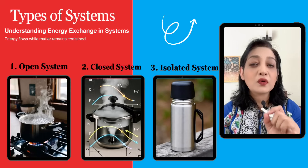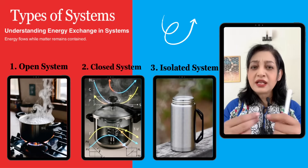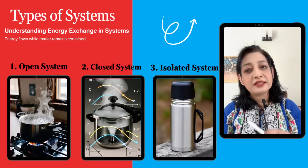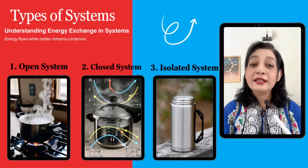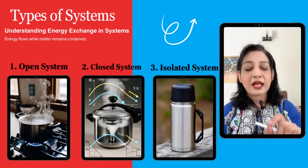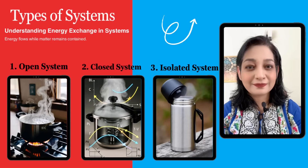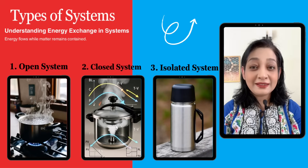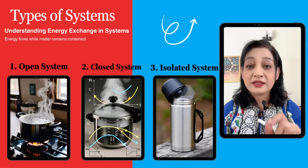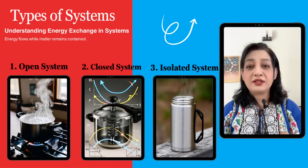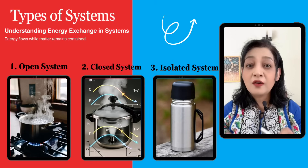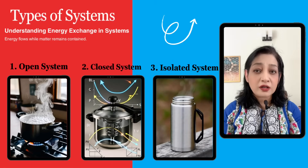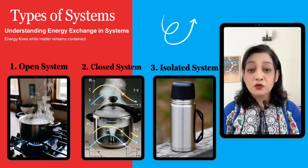Number two is the closed system: energy can transfer but mass cannot. For example, a sealed pressure cooker — heat enters but food and steam cannot escape. Number three is the isolated system: neither mass nor energy can be exchanged. For example, a thermos flask — ideally it does not allow heat or matter to transfer.